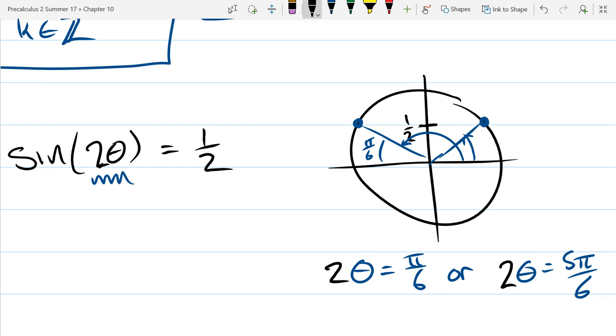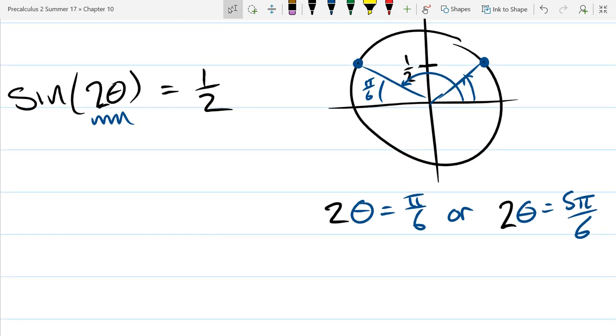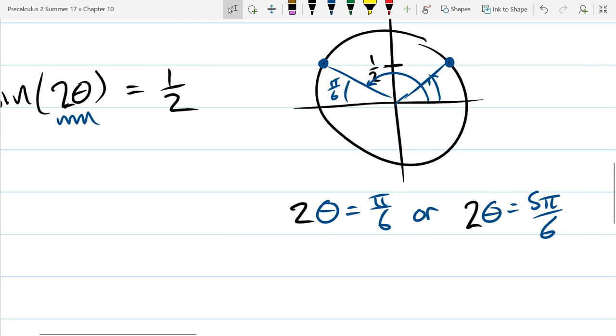So the way we're going to correct this, we got two times theta. So what we did was we didn't solve for theta. We solved for two theta. So how do you solve for theta? You divide both of these by two.